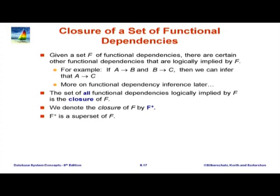Here is another related notion, which is closure of a set of functional dependencies. What do we mean by closure of a set of functional dependencies? The basic idea is that if a set of dependencies holds on a relation instance and will always be satisfied, then we can infer certain other dependencies will always also be satisfied.